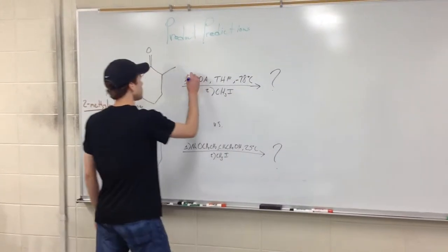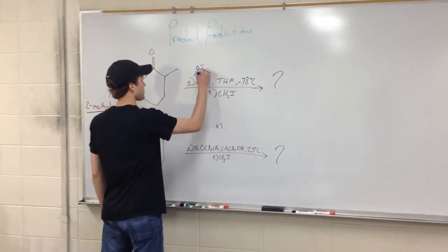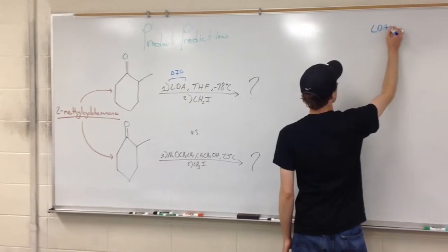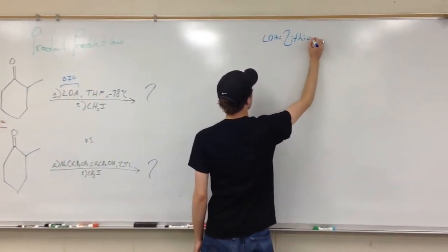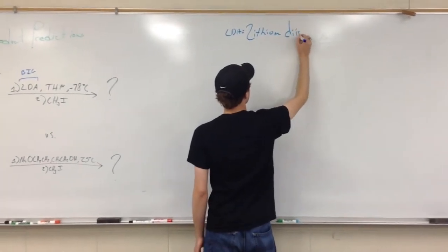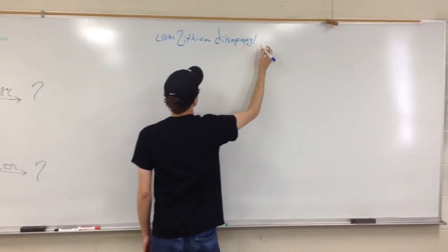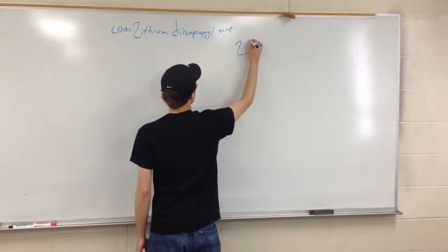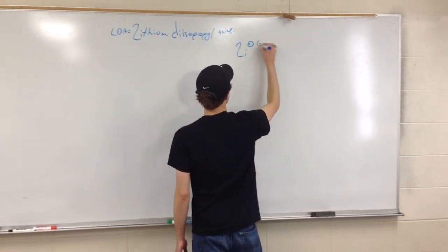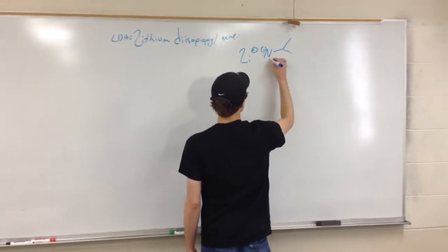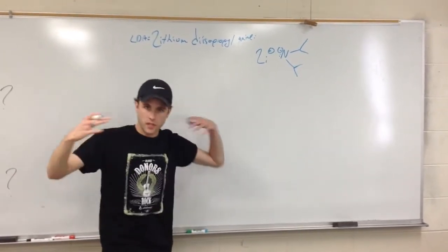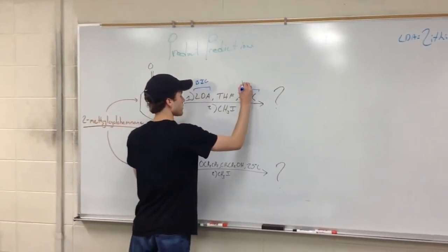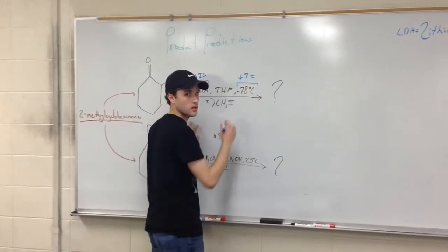Let's look at a couple things first. LDA is a big molecule — LDA is lithium diisopropylamine, which has a lithium positive and a negative nitrogen with two isopropyl groups on it. So it's big and it's going to have steric consequences. This reaction is taking place at low temperature, so low temp equals a kinetic product.